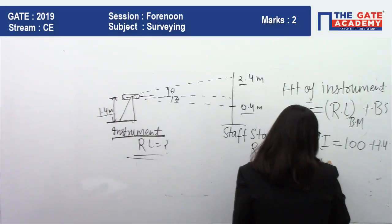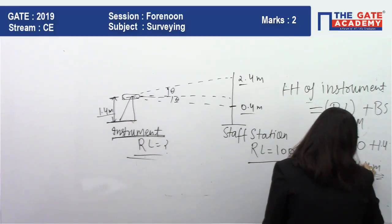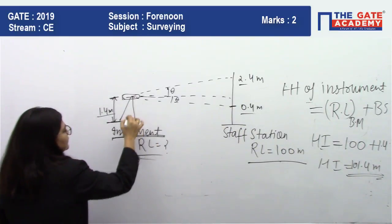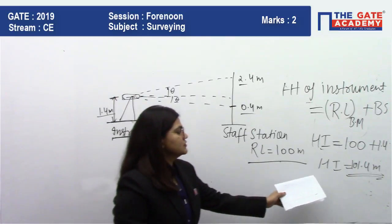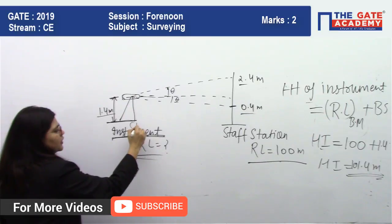So height of instrument will be 100 plus 1.4, which equals 101.4 meters. You know this total height is 101.4. They ask you the RL of this point, the RL of this theodolite location.